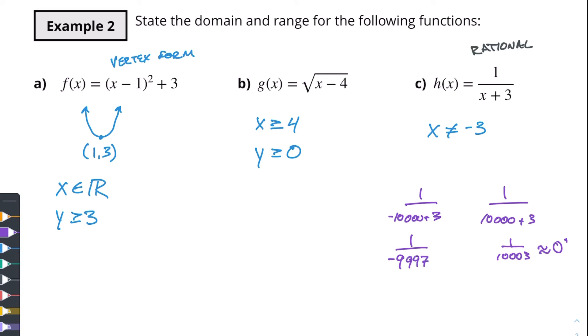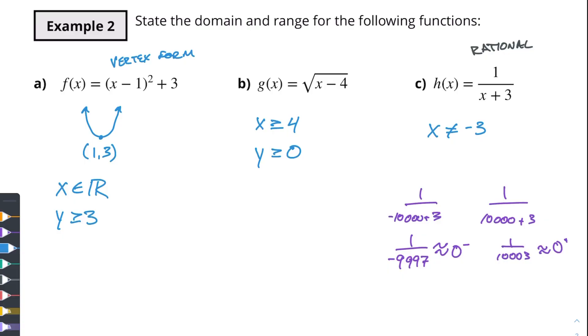And what that means is we've got a really small number, a number that's really close to 0 but it's coming up from the negative side. That's why we say it's approximately 0 positive or approximately 0 negative because it's approaching from those directions. But what's going to happen is y is never going to get to 0 itself. So in this case we would just say y does not equal 0. And again we'll get into some of the mechanics of why that is in our rational functions video.